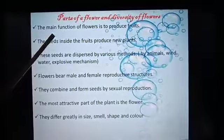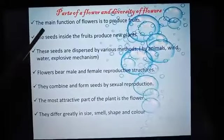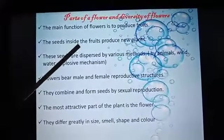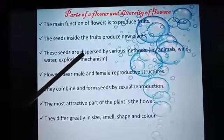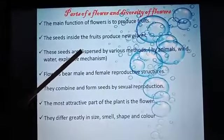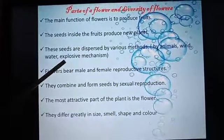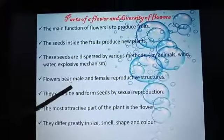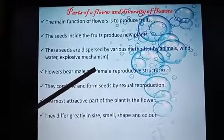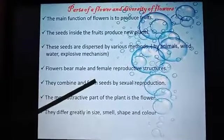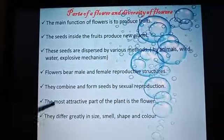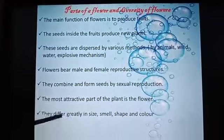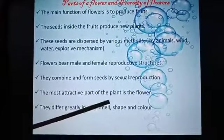Parts of flower and diversity of flowers. The main function of flowers is to produce fruits. The seeds inside the fruits produce new plants. These seeds are dispersed by various methods: by animals, wind, water, and explosive mechanisms. Flowers bear male and female reproductive structures. They combine and form seeds by sexual reproduction. The most attractive part of the plant is the flower; they differ greatly in size, smell, shape and color.